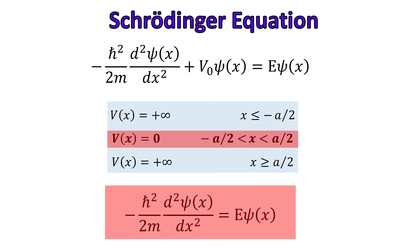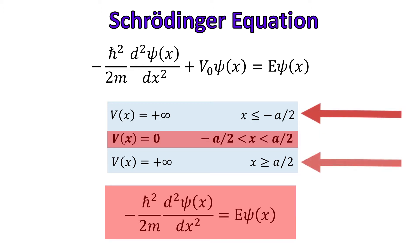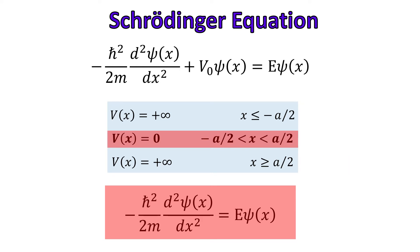Since the potential doesn't depend on time, we will be able to use the time-independent Schrödinger equation to find the wave function. If the particle is confined to the box, we can't find the particle outside the box, so the wave function for x ≤ −a/2 and x ≥ a/2 is zero. The potential V is zero inside the box, and outside the box the potential is infinite, confining the particle within the box.